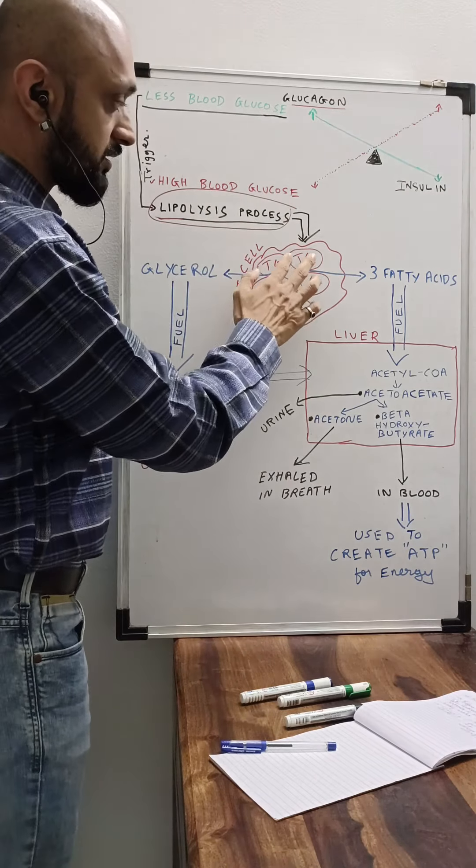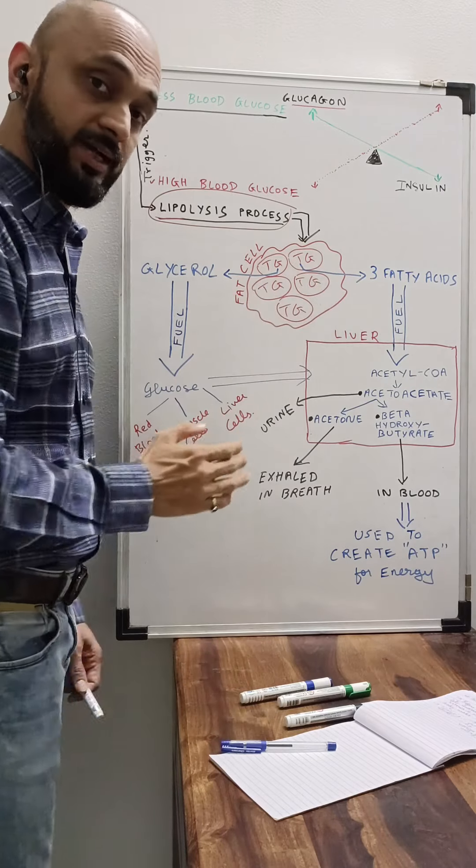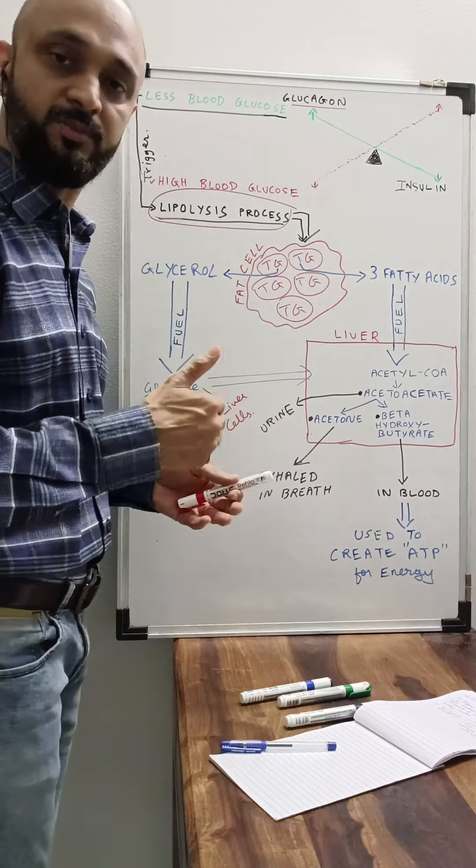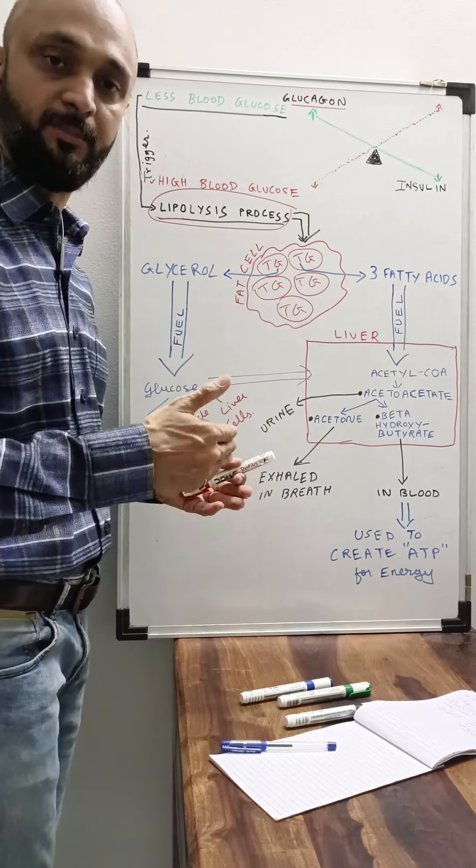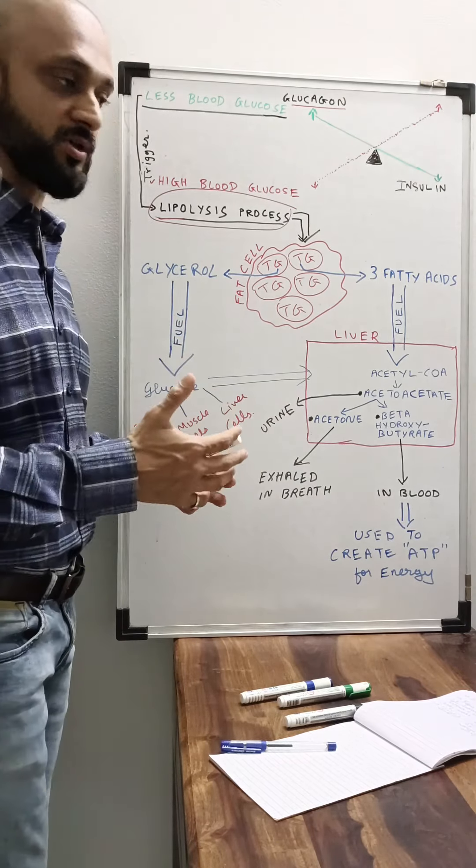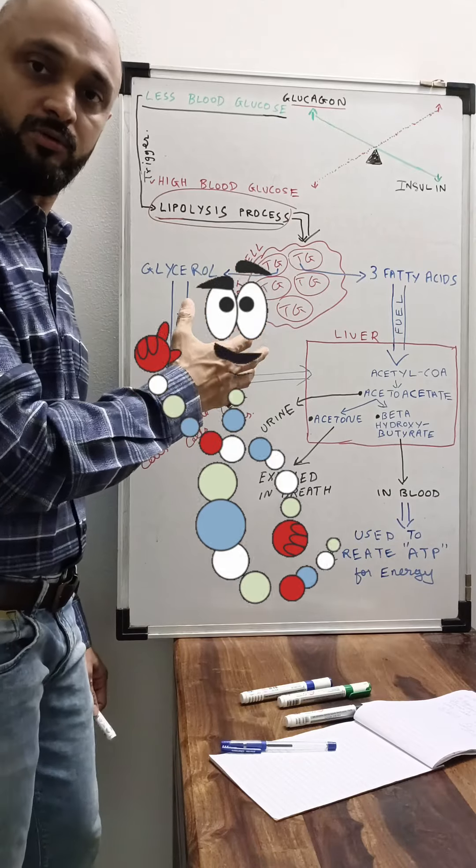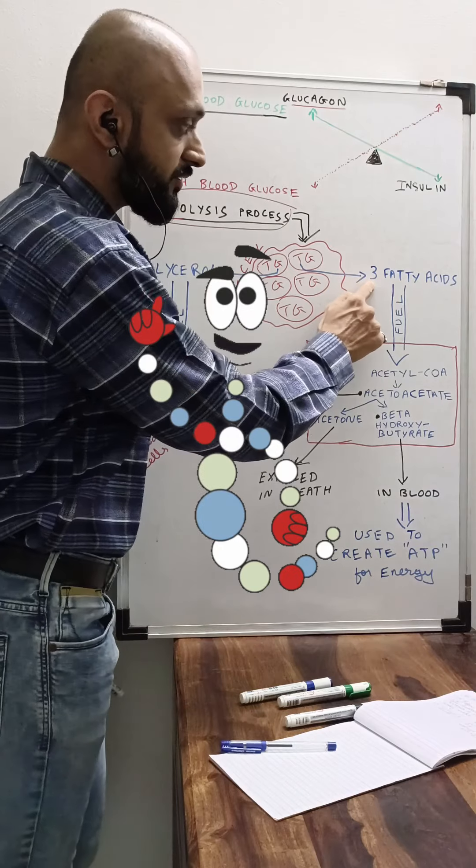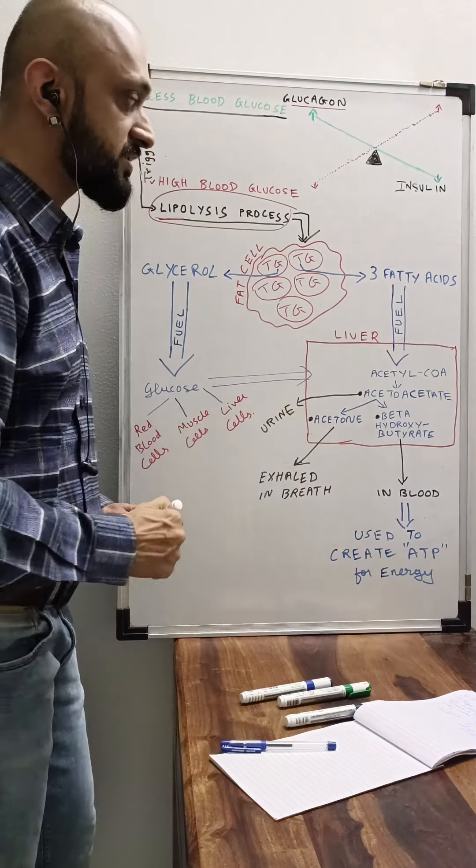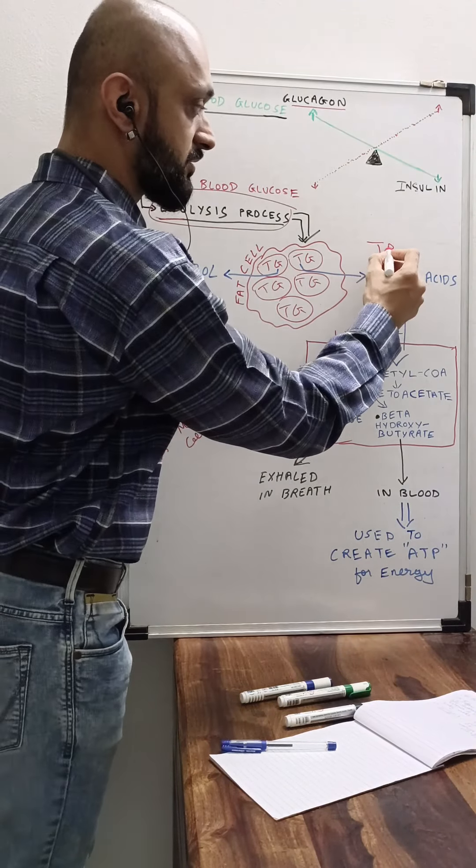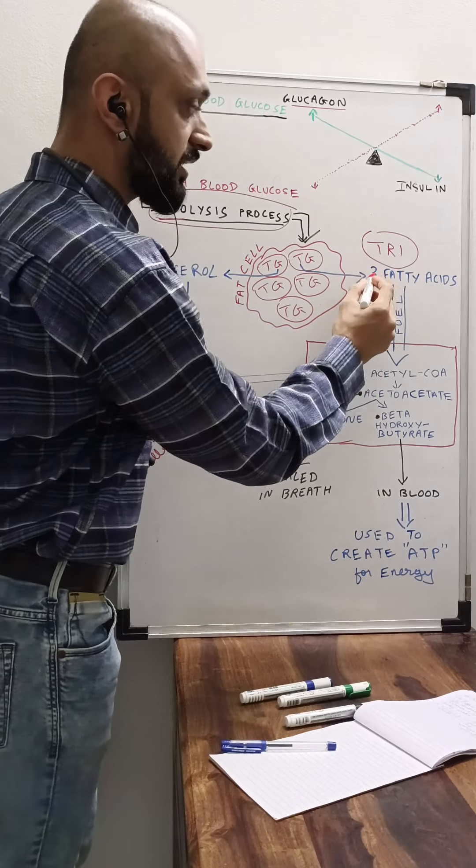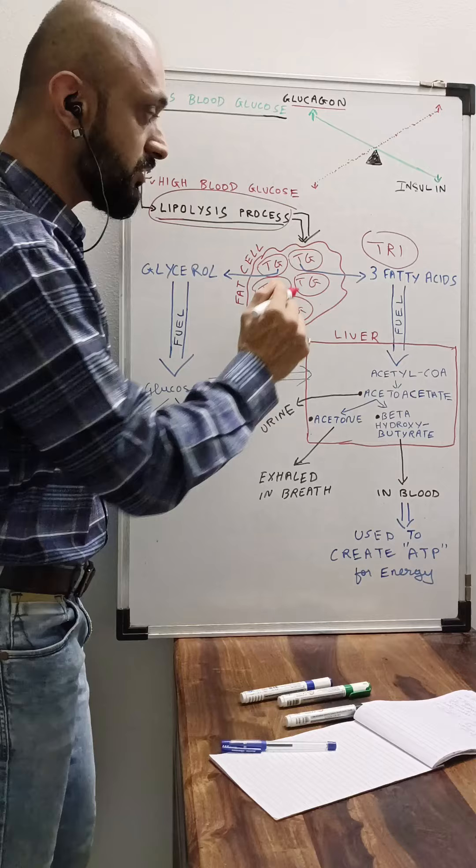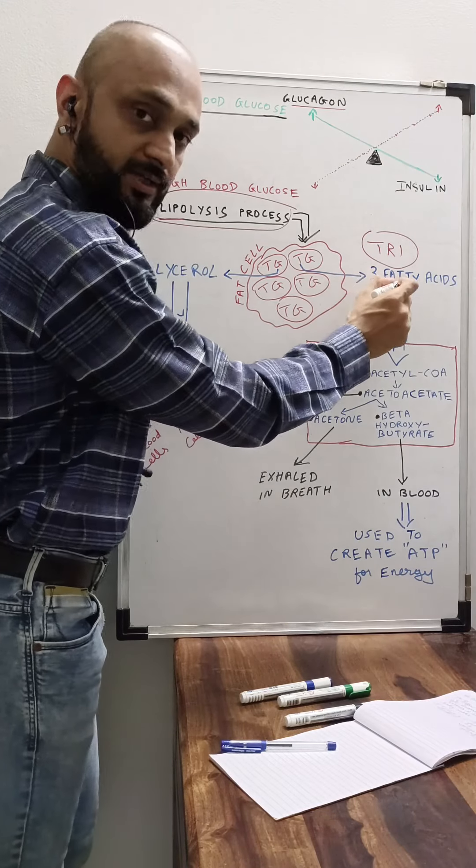After this lipolysis process, the triglycerides get divided into two parts. There is some biochemistry happening, certain enzymes are responsible to break this down and divide the triglyceride into two parts. One is the fatty acids.